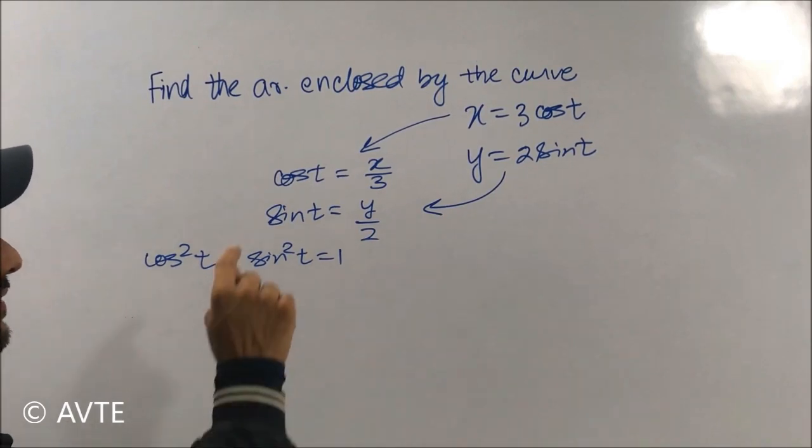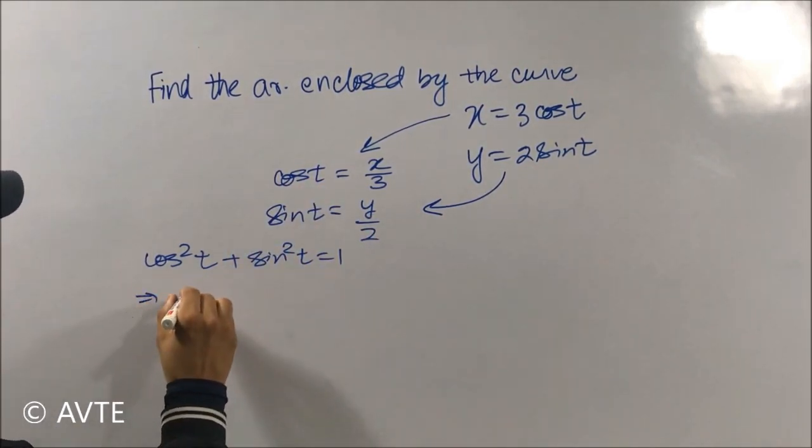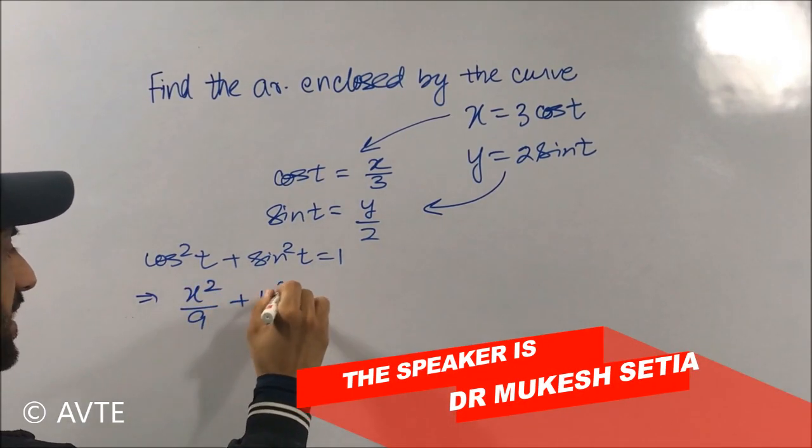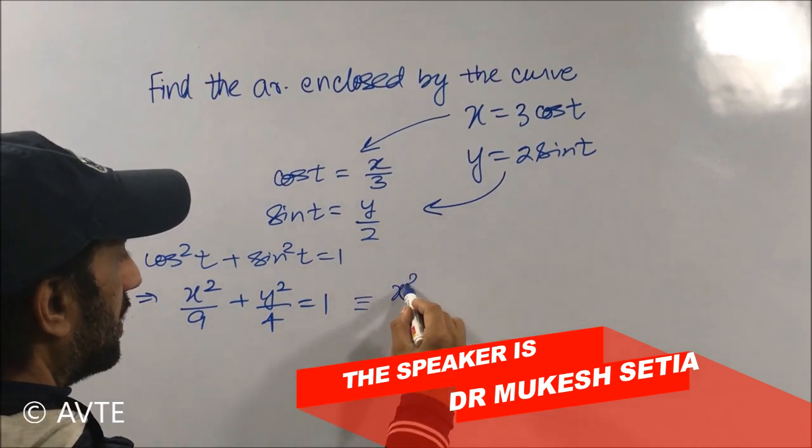And with that what you can see, it is X square upon 9 plus Y square upon 4 is equal to 1. And this is of the type X square by A square plus Y square by B square is equal to 1, and this is horizontal ellipse.